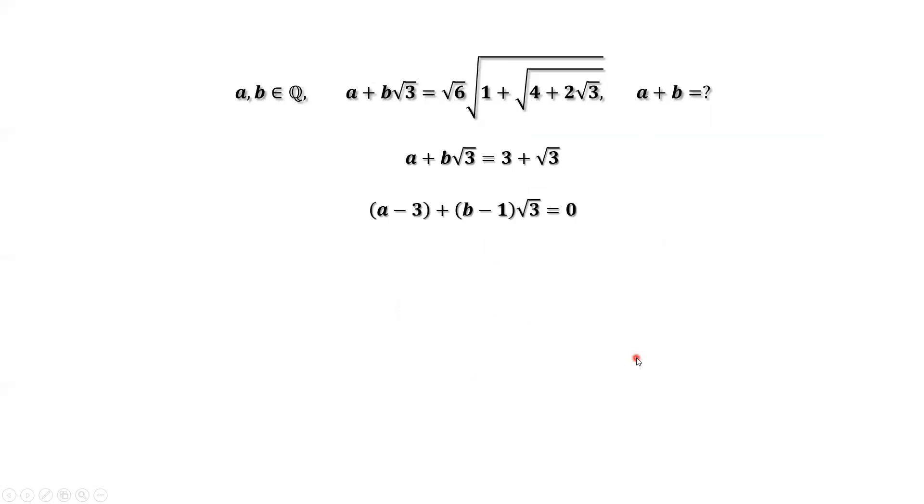Move everything to the left-hand side, simplify, we have (a - 3) plus (b - 1)√3 equals 0.